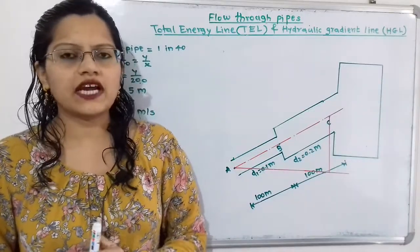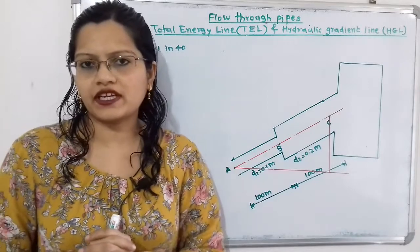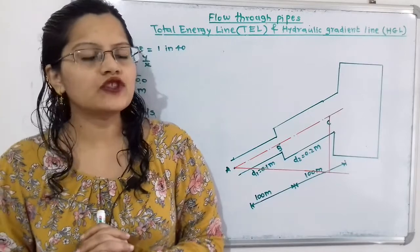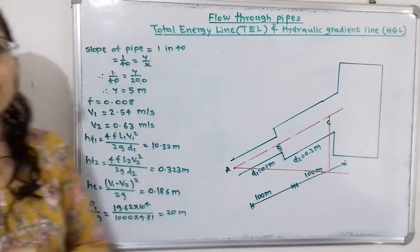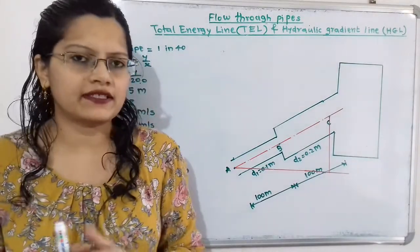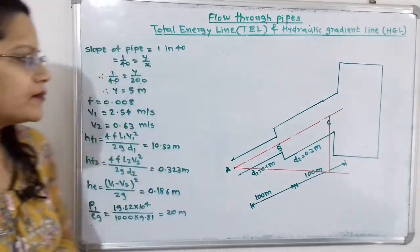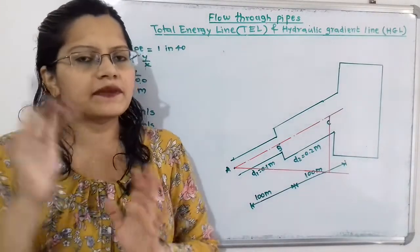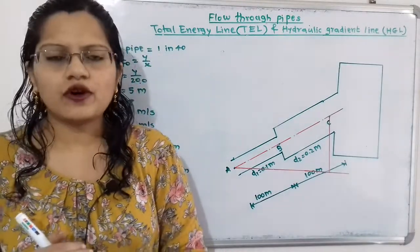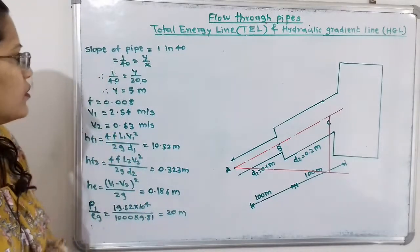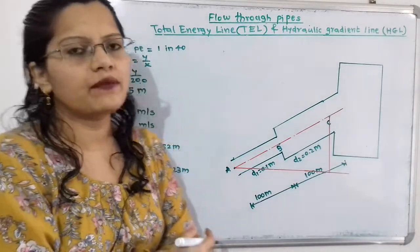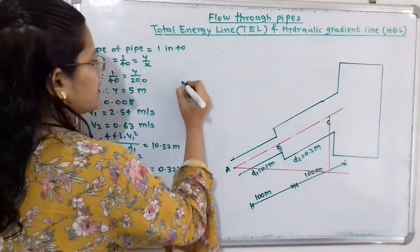Let us first understand how to draw the diagram as per the given data. The pipe ABC is inclined with slope 1 in 40, which we write as 1/40. Slope equals Y/X. The total length of the pipe is 100 + 100 = 200 meters, so X = 200 meters.